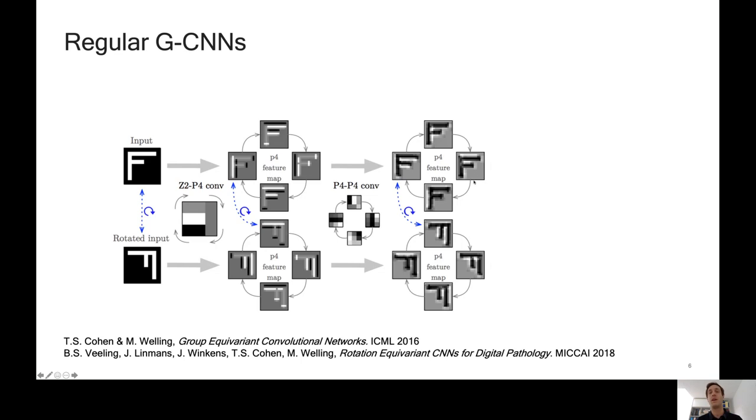In the second and higher layers of this network, we have a filter which now has four input orientation channels. We apply the same principle. We convolve this filter with the input feature map, and then we rotate it, convolve again, etc. But now rotation of this filter means rotate each of the channels and cyclically permute the channels. And one can show that if you do this, then the network maintains its equivariance property. And then at the end, you could do an invariant pooling to obtain, say, for example, segmentation output which transforms just like the input image.